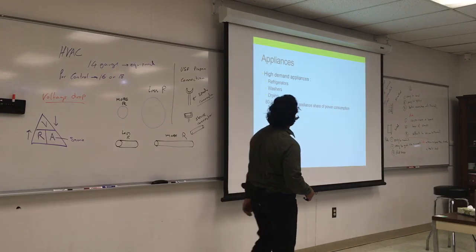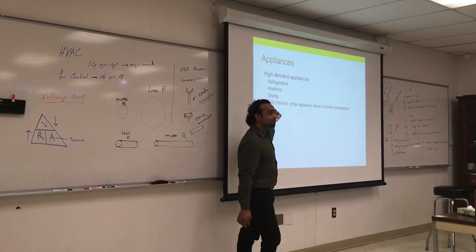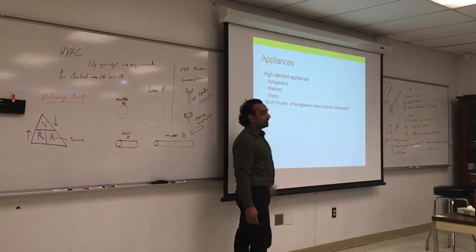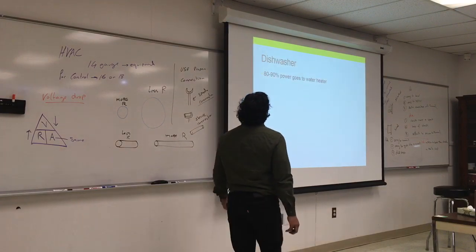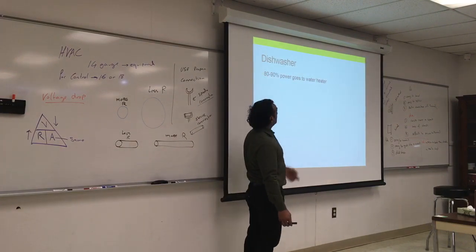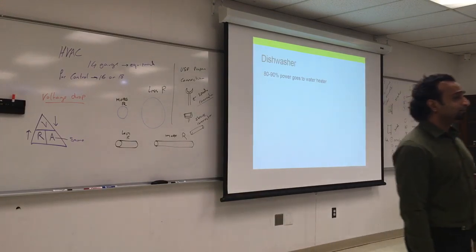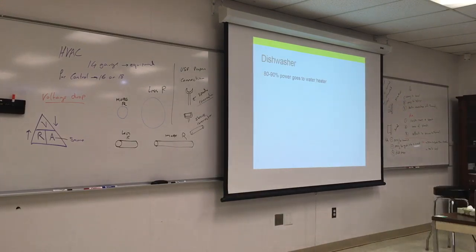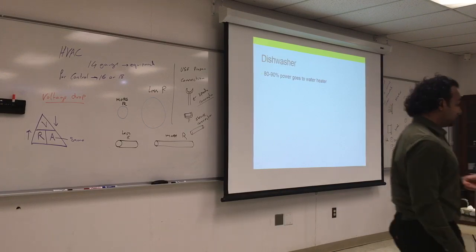For a dishwasher, 80 to 90% of the power goes to water heating. That's why if you buy a new washer — sorry, dishwasher — a lot of power goes to water heating, and they also have their own heating coil, so you can choose the option of having heated water or no heat.